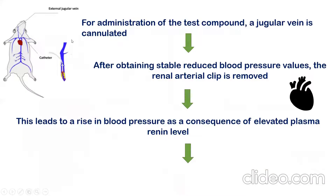Then for administration of the unknown drug, you can cannulate either the jugular vein or the femoral vein. You can cannulate either femoral or jugular and from that vein, you can administer your unknown drug in different doses.